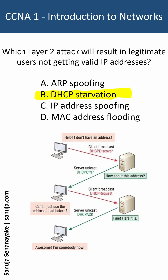DHCP uses something we call the DORA process, which is Discover, Offer, Request, and Acknowledgement. When a client first connects to a network, it sends out a broadcast asking where the DHCP server is. That's the Discover part of it.